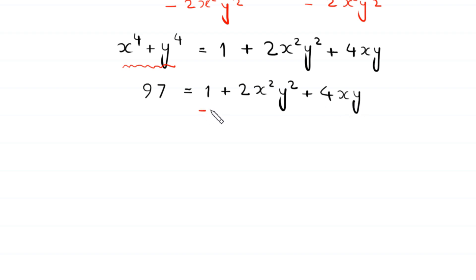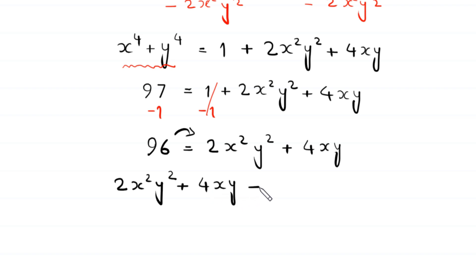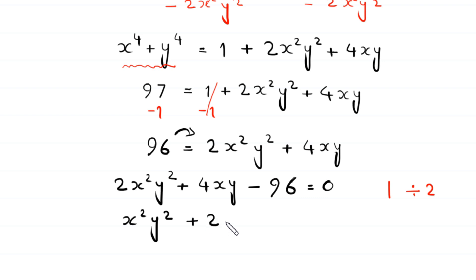We subtract 1 from both sides, so 97 minus 1 gives 96 equals 2x squared y squared plus 4xy. Moving 96 to the right hand side gives 2x squared y squared plus 4xy minus 96 equals 0. We divide both sides by 2, giving x squared y squared plus 2xy minus 48 equals 0.